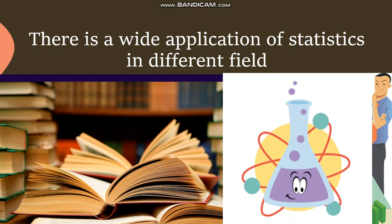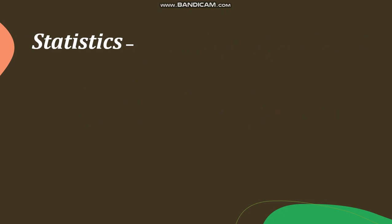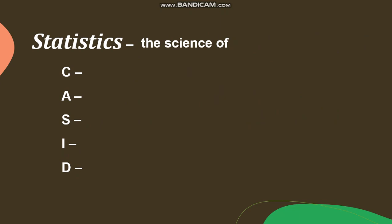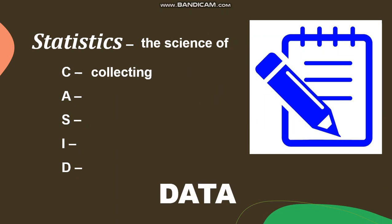So after learning the background and hearing some examples, the question is: what is statistics? There are many ways books define the word statistics. Statistics is the science of — and we can use the acronym C-A-S-I-D. The first letter is C, which stands for collecting. So statistics is the science of collecting data.